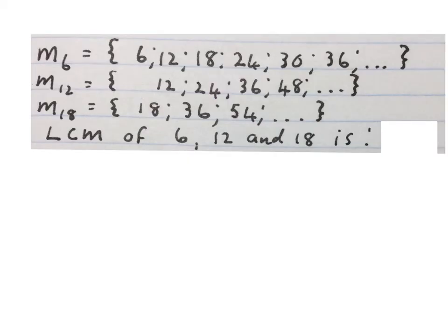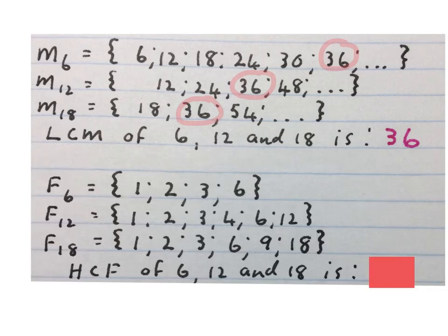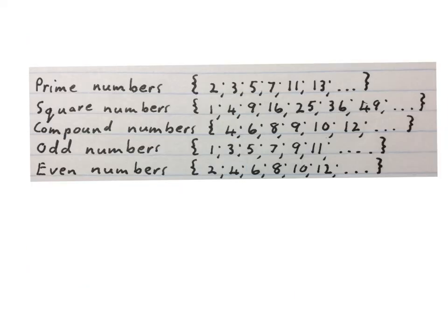Here we have three sets of multiples. The multiples of 6, of 12 and of 18. The lowest common multiple of 6, 12 and 18 is 36. That is the lowest multiple factor of 6, 12 and 18. Now if you take the factors of 6, 12 and 18, the highest common factor of 6, 12 and 18 is 6. That is the highest factor we see in each one of them that is common to all three.